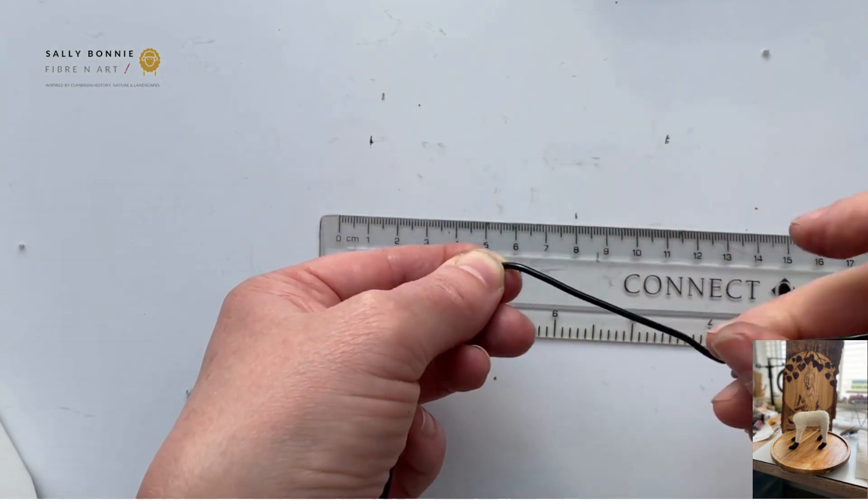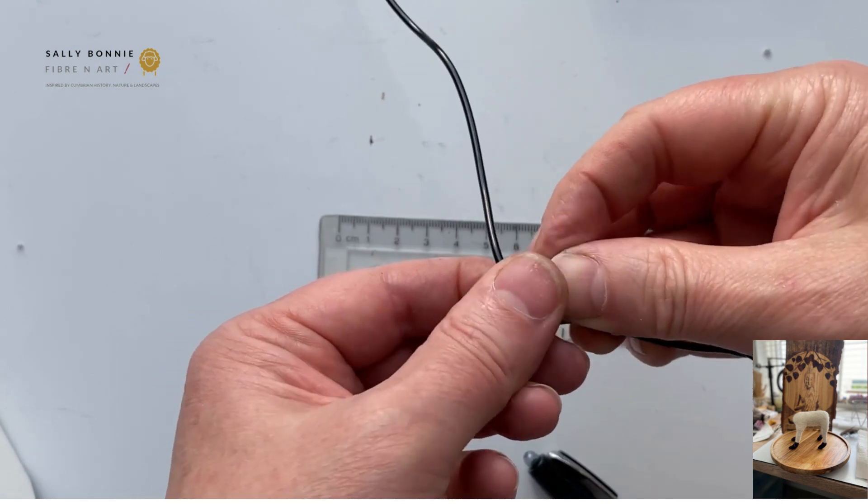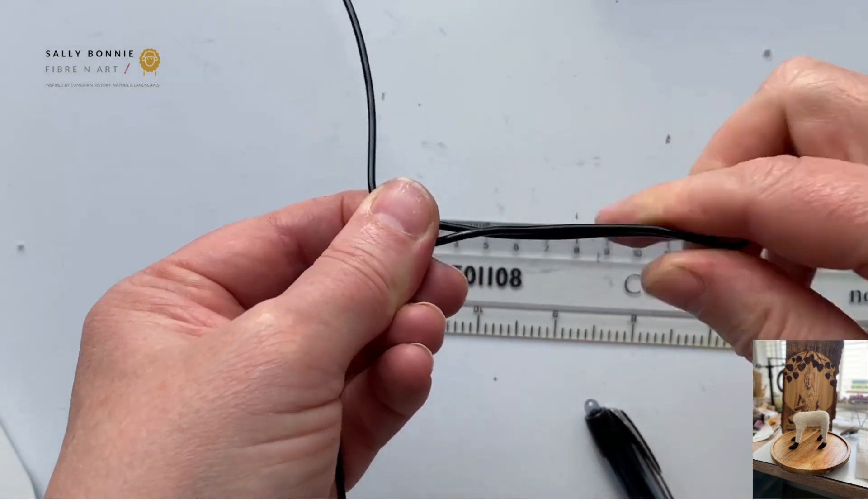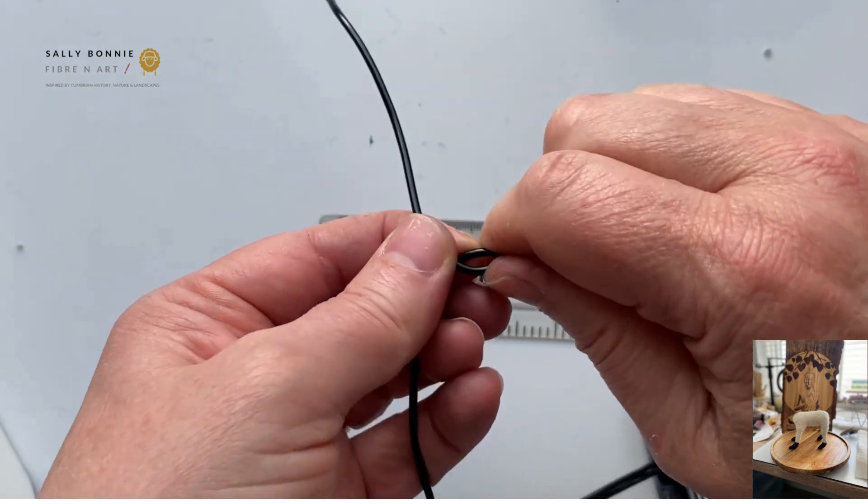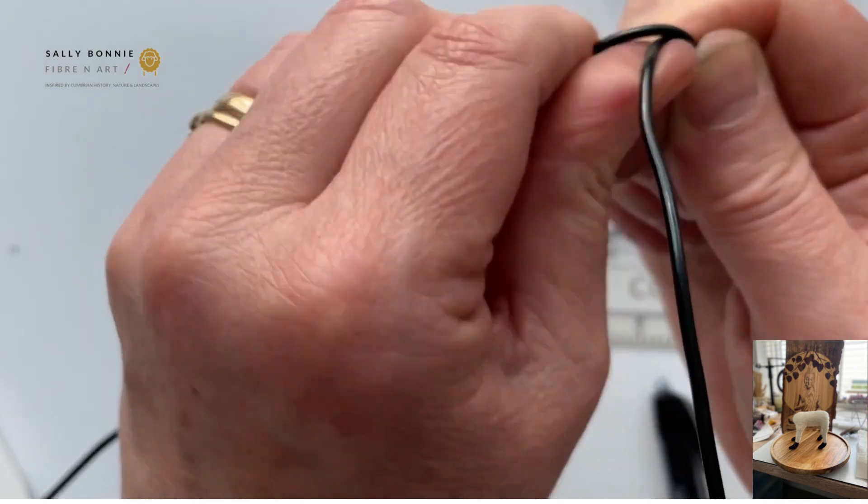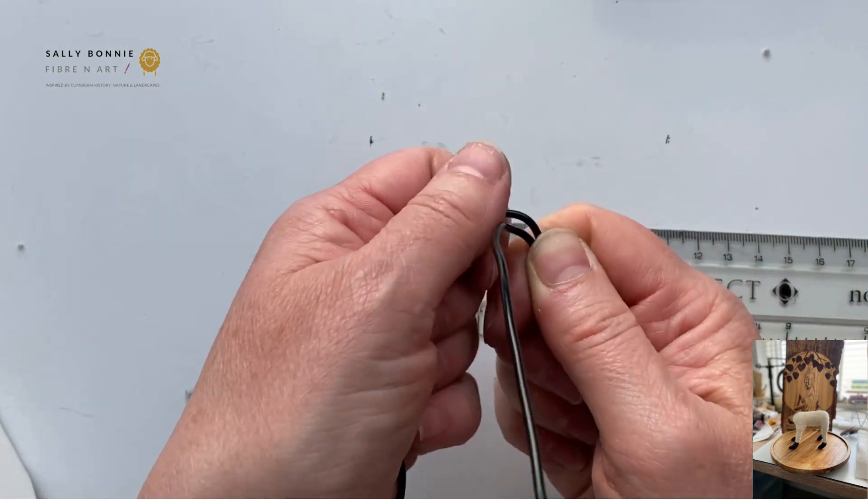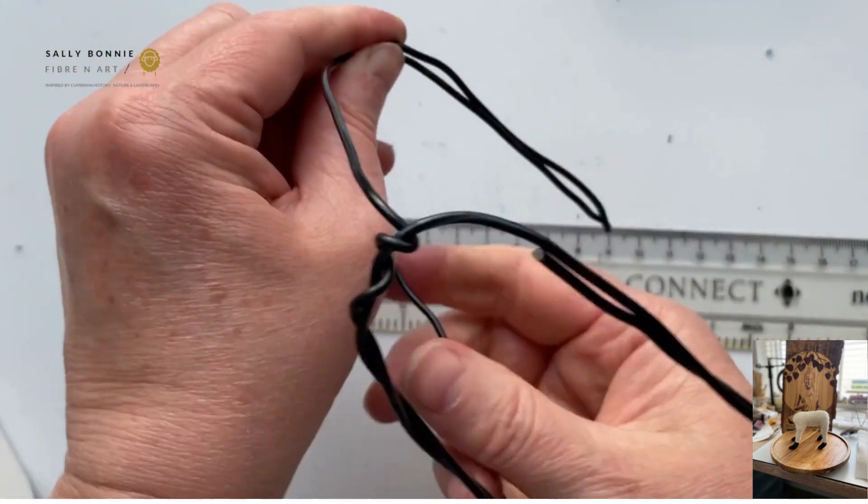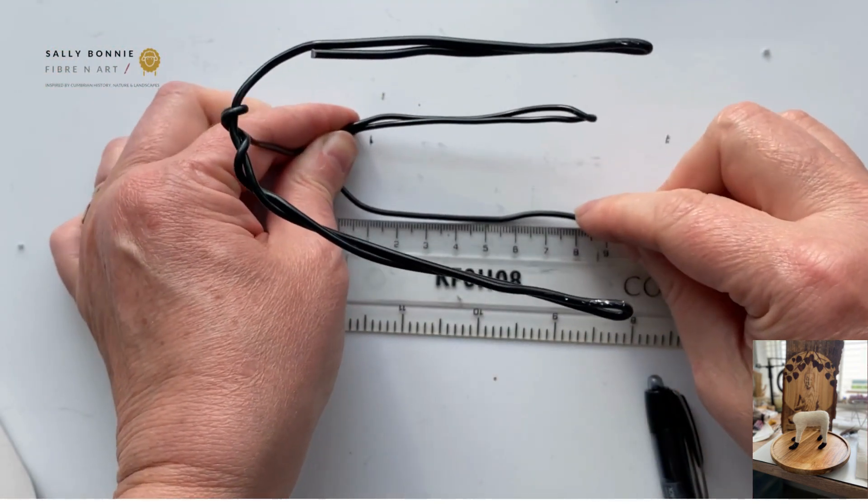So we're roughly 10. Okay, ladies, so you're going to take your eight centimeters and you're going to fold that back on itself. At this one, just kind of get the shape in and then we can do the tightening.